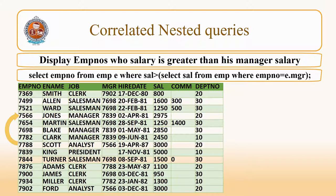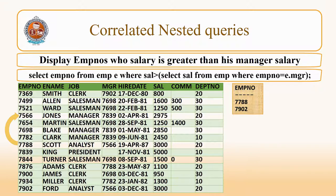The final query is SELECT EMPNO FROM EMP (with alias E), where his salary is greater than his manager's salary. The result will be employee numbers 7788, and also 7902. 7902 is Ford — his manager is Jones with employee number 7975.